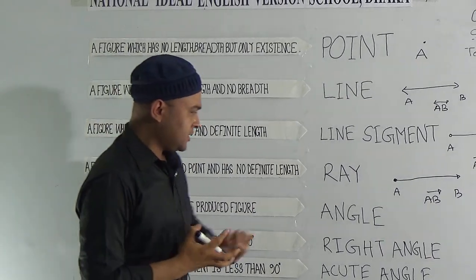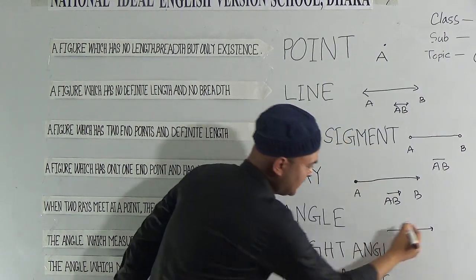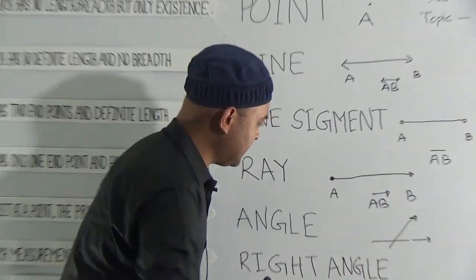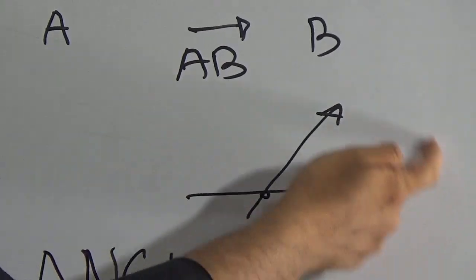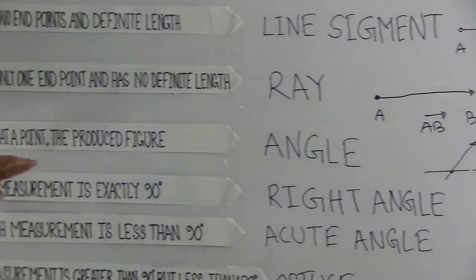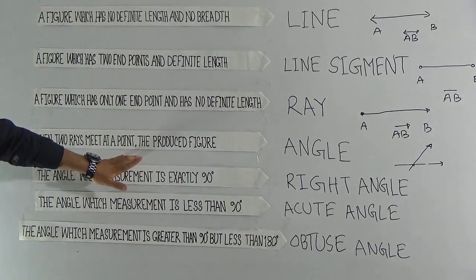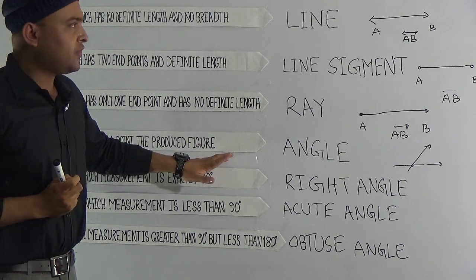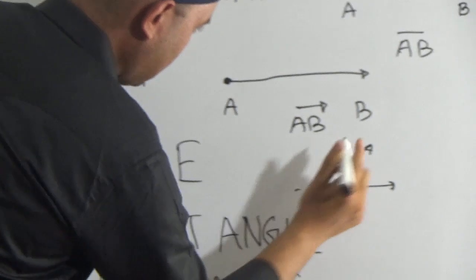Look, my students. If we consider two rays, this one is a ray and this one is another ray. What are you seeing here? There is an intersecting point and this figure makes an angle. We can say when two rays meet at a point, they produce the figure.